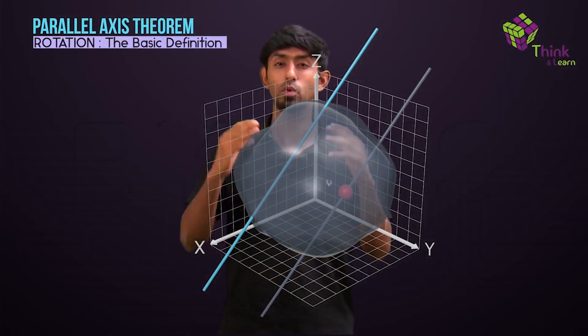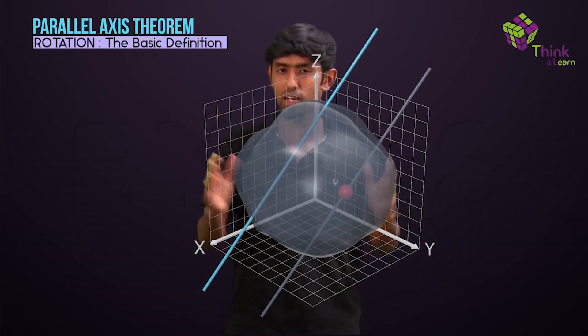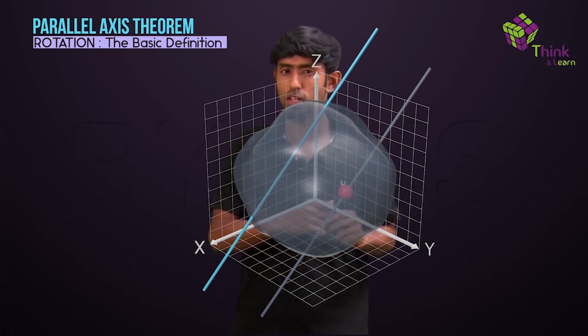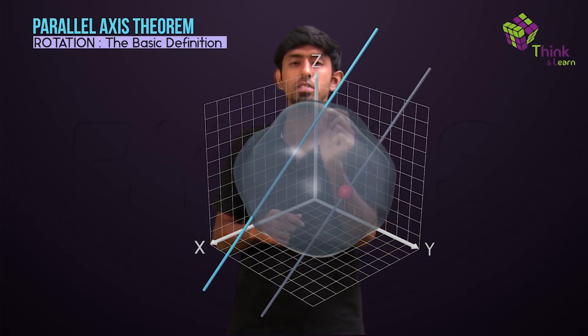Now I am going to use one of my most favorite phrases: without loss of generality. Why I like it so much is it reduces so much work. Without loss of generality, I can make the center of mass the origin. So the body goes and sits there very cozily.